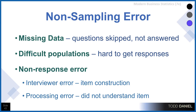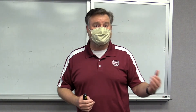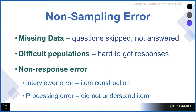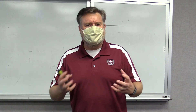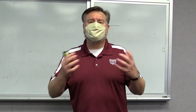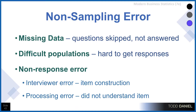Difficult populations are another issue — there are some individuals that are more difficult to sample, either because it's difficult to have access to them or they are less likely to answer questions on a survey. And then non-response error, which could be on the part of the interviewer or the respondent. Interviewer-based non-response error often has to do with item construction — the way items are created causes confusion or there's something wrong with their design. On the part of the respondent, they may become confused or not understand the wording of a certain item or what it's asking about.